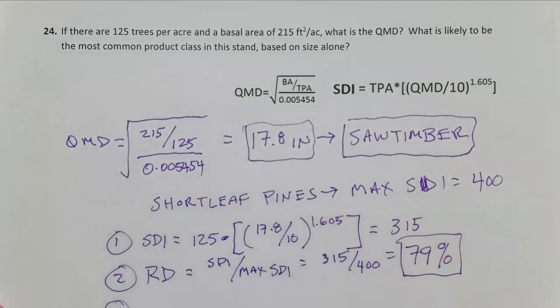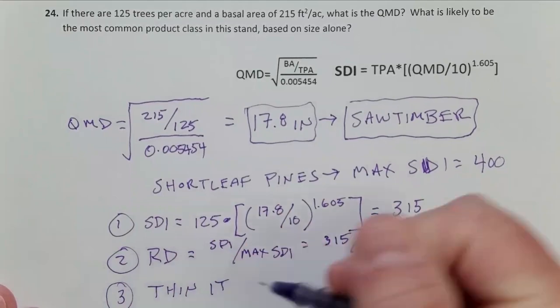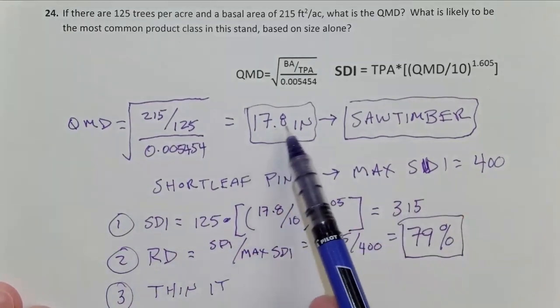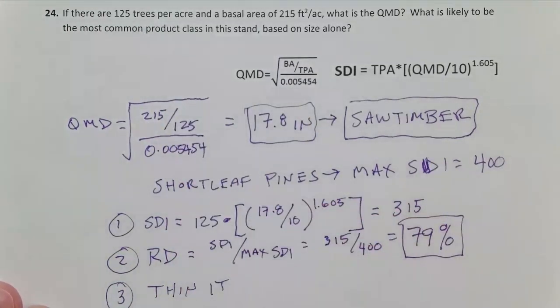So step three, interpret that relative density. Well look at that, that's way over where we expect mortality to be occurring, right? Mortality is going to occur in the 55 or 58% range. So interpretation here would be thin this stand. That's really high. Maybe that's a stand that needs to be regenerated. I mean, if your trees are almost 18 inches diameter, you have a really high basal area, a lot of trees per acre, this might be a stand that's at the end of its rotation and you're looking at clear cutting, doing seed tree, some other regeneration. So there's more than the problem asked for, but again, good helpful practice to figure out these three steps to make that decision on thin it or regenerate.